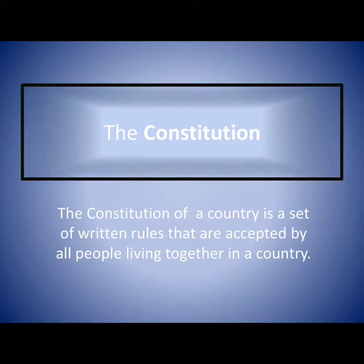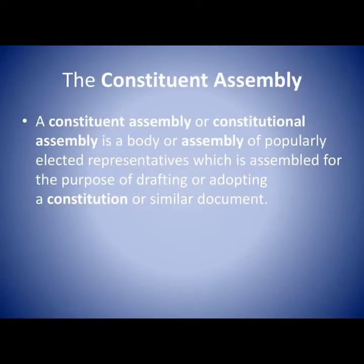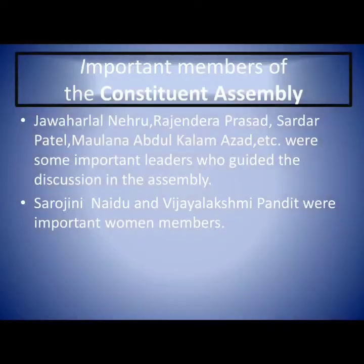For making this constitution, they first made an assembly, known as the Constituent Assembly. A constituent assembly, or constitutional assembly, is a body of popularly elected representatives assembled for the purpose of drafting or adopting a constitution or similar documents.